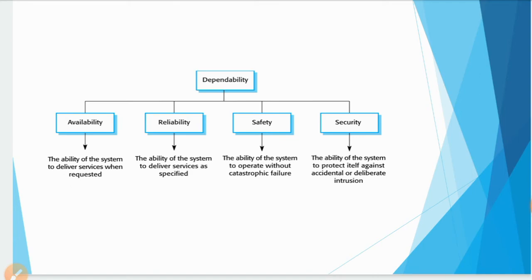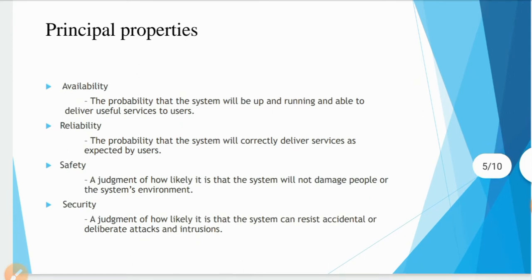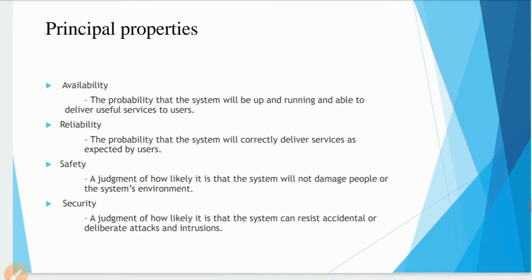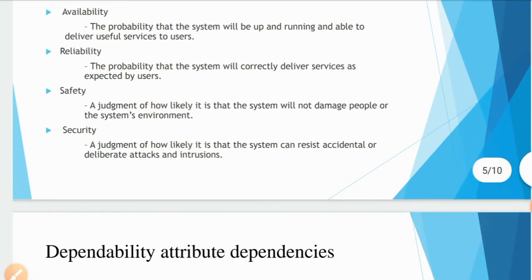The principal properties of dependability: availability is the probability that the system will be up and running and able to deliver useful services to the user. Reliability is the probability that the system will correctly deliver services as expected by the user. Safety is a judgment of how likely it is that the system will not damage people or the environment. Security is a judgment of how likely it is that the system can resist accidental or deliberate attacks and intrusions.